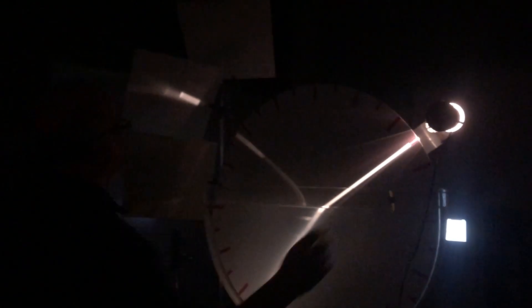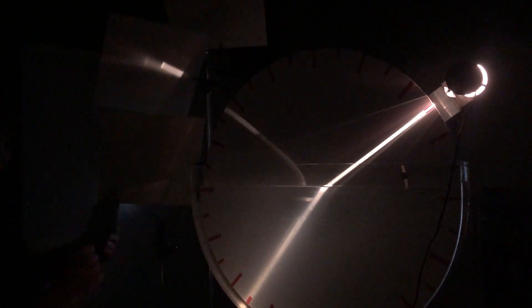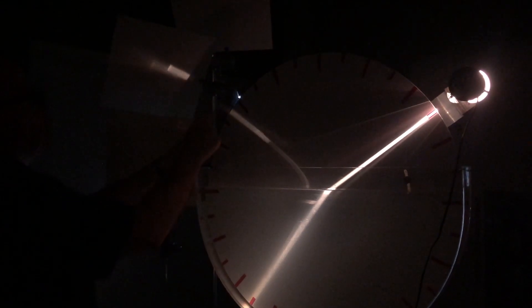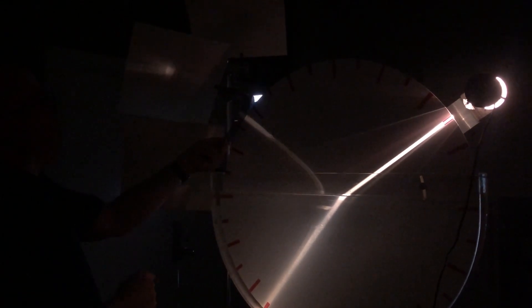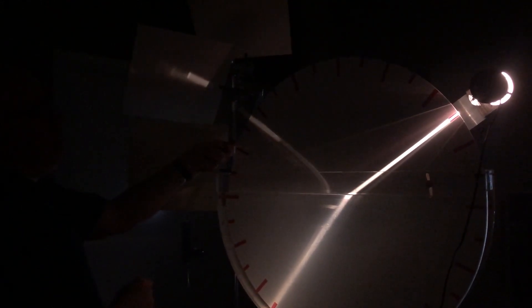But if I change the angle of incidence with the water so now it's at the Brewster angle for water, it's maximally polarized. Now I can insert the polarizer and rotate it and I can extinguish that spot and rotate it back parallel.